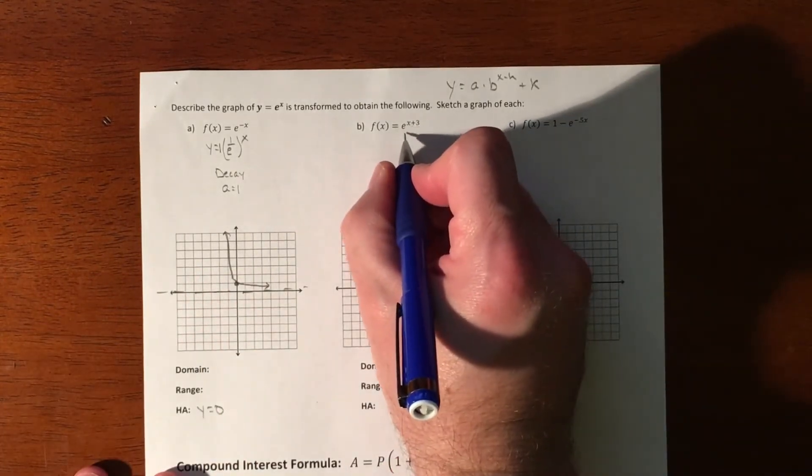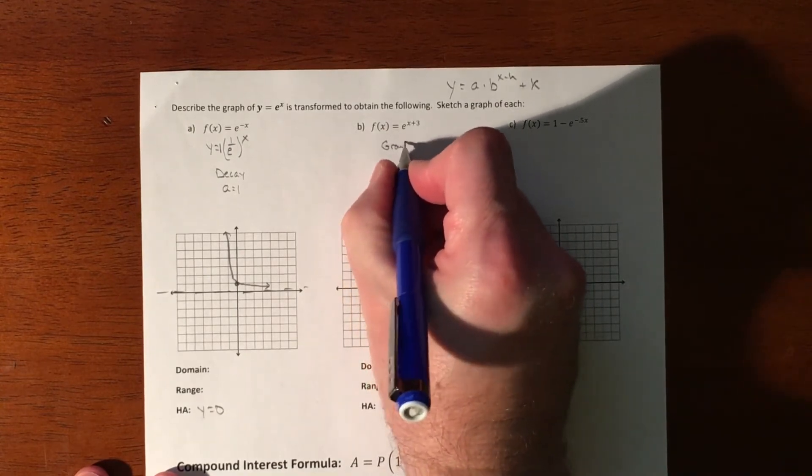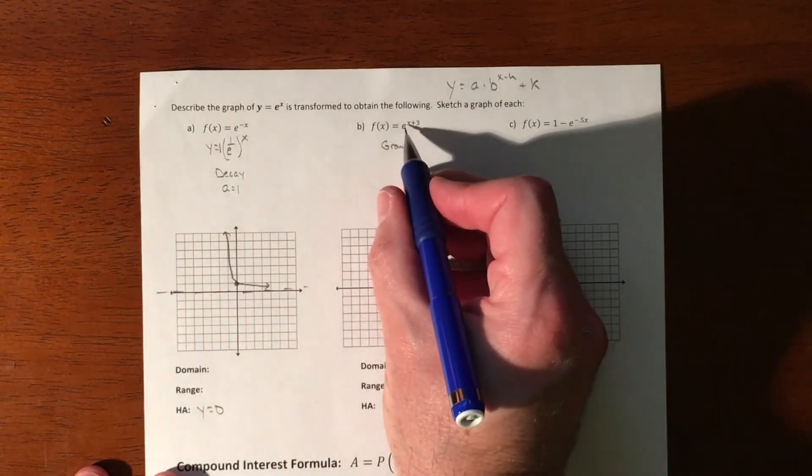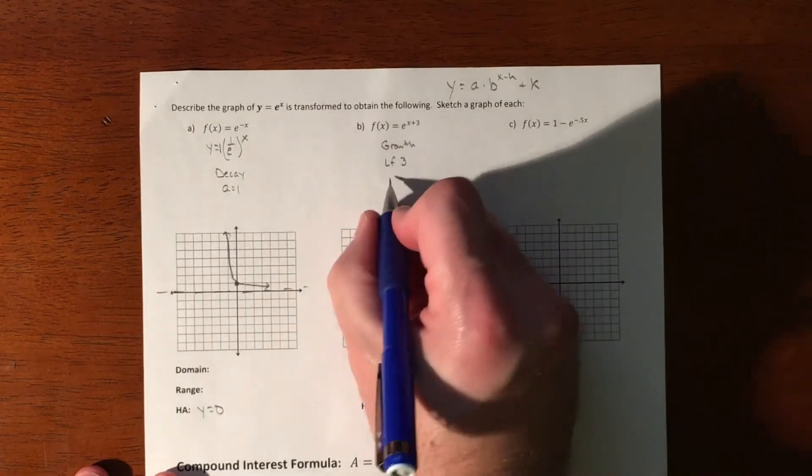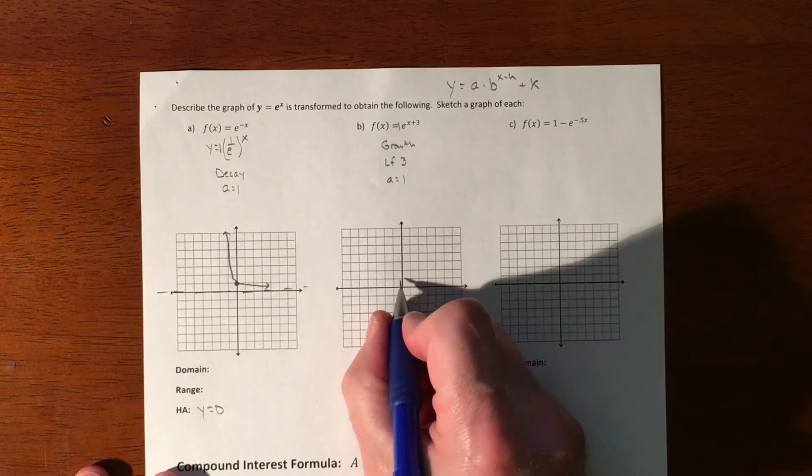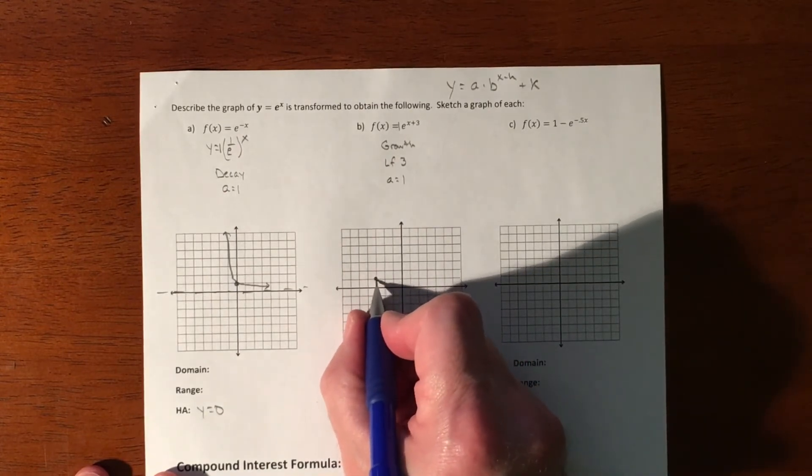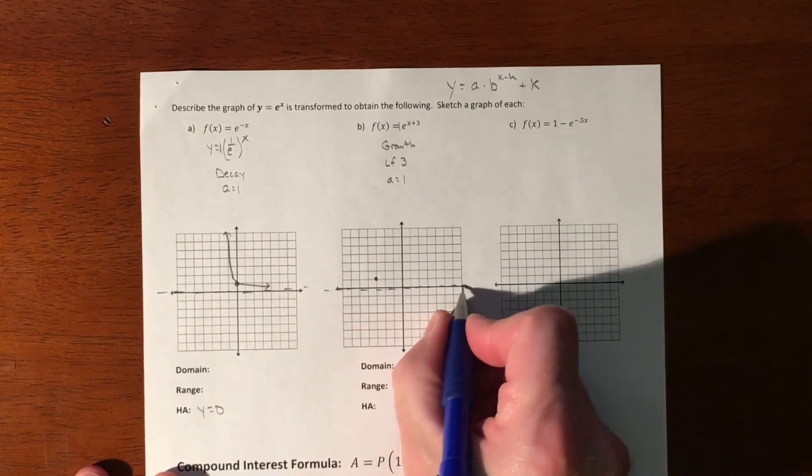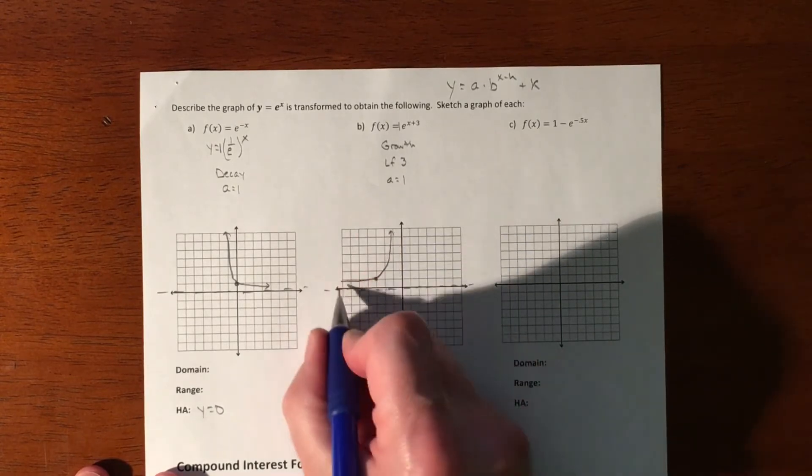Here, everything is basically the same. This time we have a growth because it's not 1 over E. So this is going to be less than 1. This is going to be greater than 1. And we are just going to shift to the left 3. So our A value is 1 because there's a 1 in front of that. So we're at 0, 1. And we're going to go left 3. 1, 2, 3. We don't have any kind of horizontal effect on our graph. And we have a growth equation.